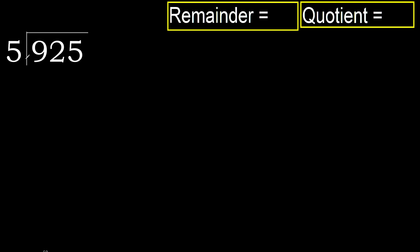925 divided by 5. We start with 9. 5 multiplied by which number is nearest to 9 but not greater? 5 multiplied by 2 is 10 — that is greater. 5 multiplied by 1 is 5 — it is not greater. 9 minus 5 is 4.